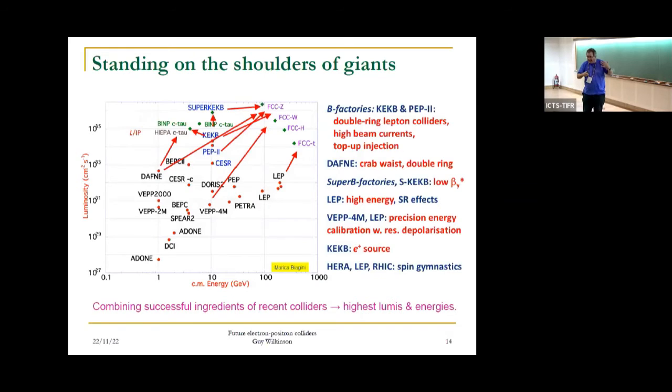How do you achieve these luminosities? This isn't an accelerator talk, so all I'll say is one is leveraging all the experience, not only of LEP but of all e+ e- machines since. In particular, the B factories with their double ring operation and top-up injection. Getting to the luminosities I'm talking about will be difficult, but it's certainly not science fiction. This is in some sense tried and tested technology.